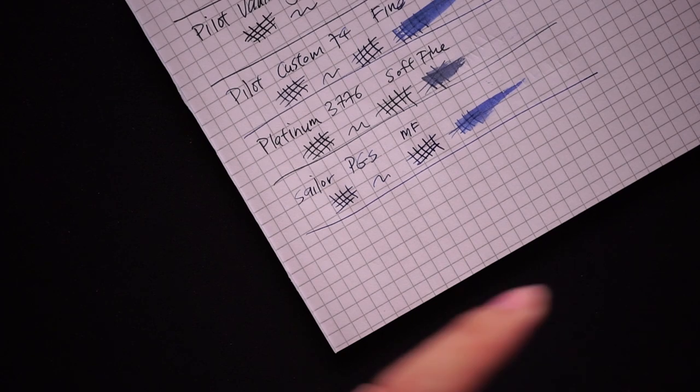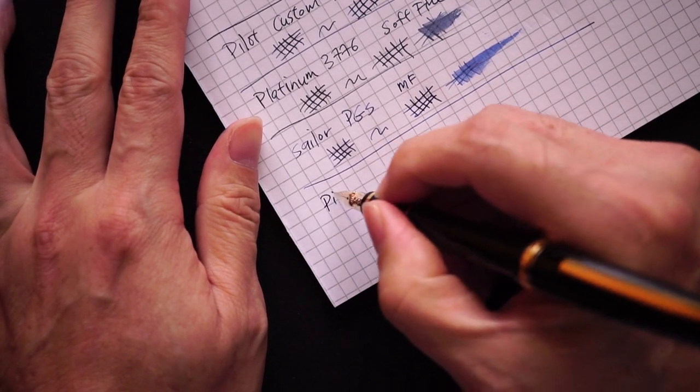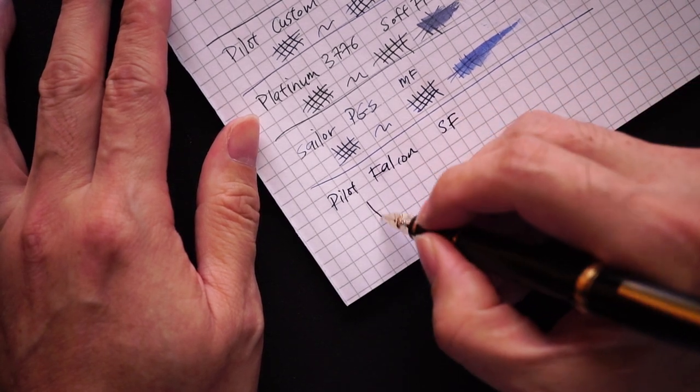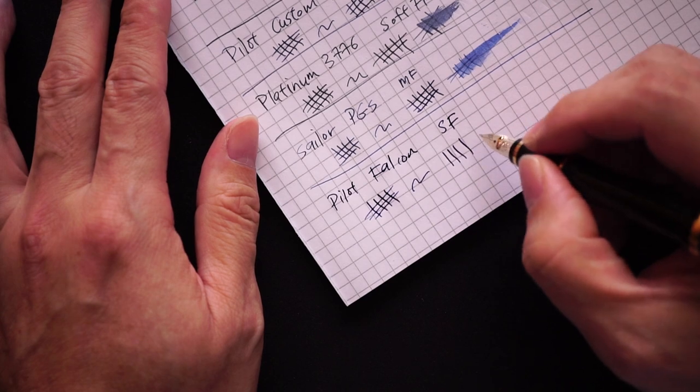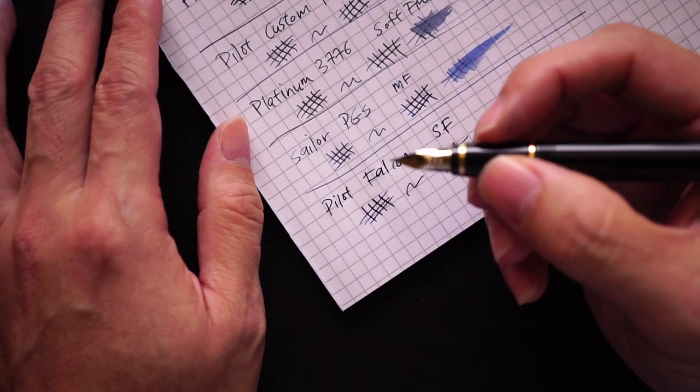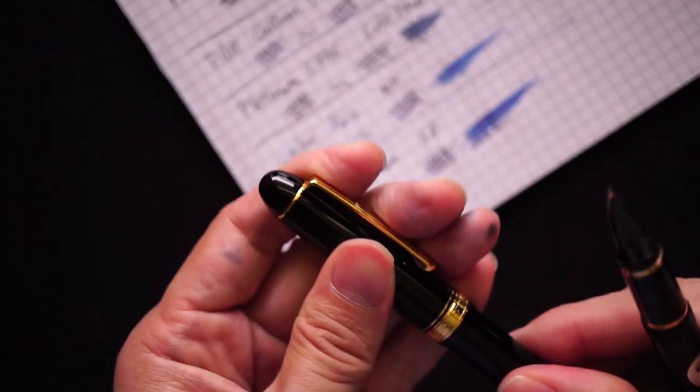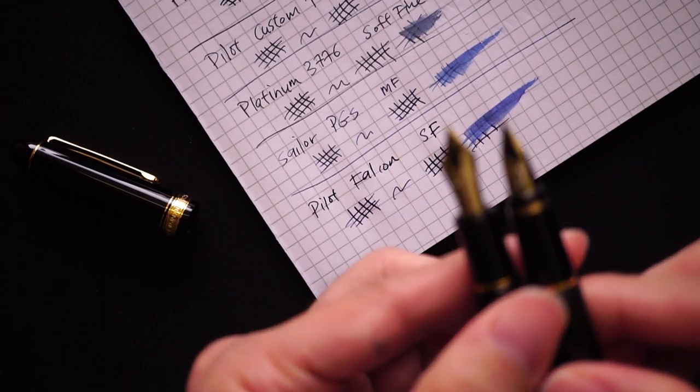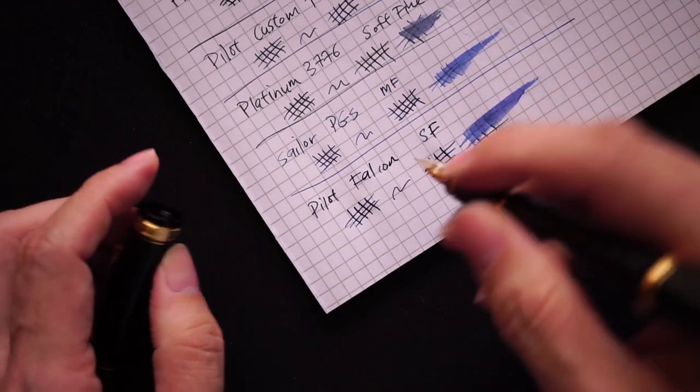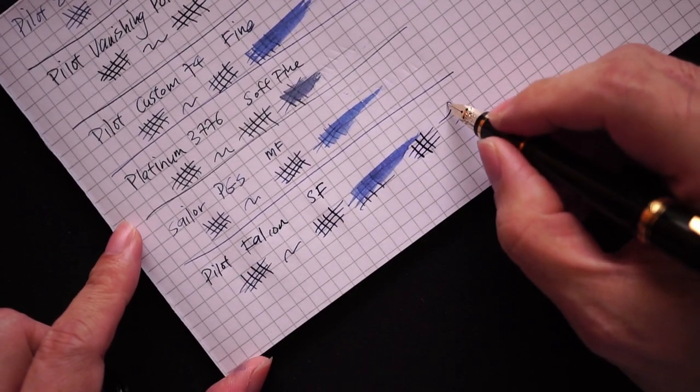The last pen would be the Falcon. This one is in Soft Fine. Maybe I'm biased, probably biased. Nib-wise, I think this nib is probably one notch above the 3776. Size notwithstanding because it is a very small nib compared to the 3776, length-wise. But I actually prefer the Falcon in terms of how it feels, and the softness for sure. You definitely can get a little bit of line variation with this nib.